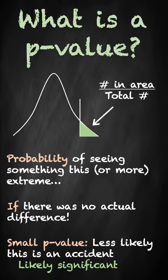A small p-value means that it's less likely this is an accident and it's likely significant, whereas a larger p-value means that it probably comes from the same distribution.